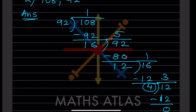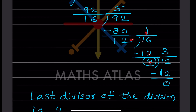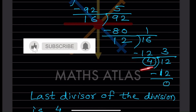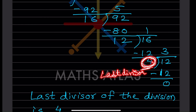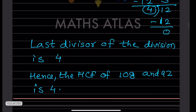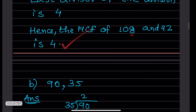Divide 92 by 16: 16 × 5 = 80, remainder is 12. Now divide the previous divisor 16 by 12: 12 × 1 = 12, remainder is 4. Then divide 12 by 4: 4 × 3 = 12, remainder is 0. When the remainder is 0, stop and note the last divisor. The last divisor is 4, so the HCF is 4.